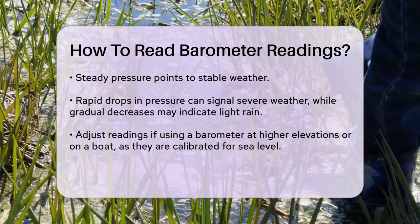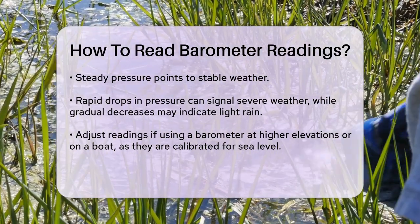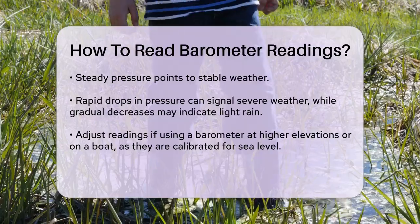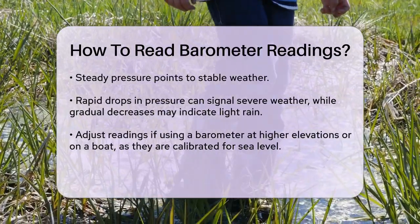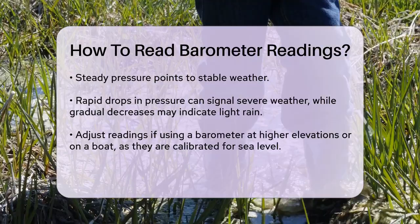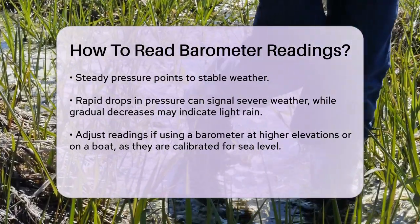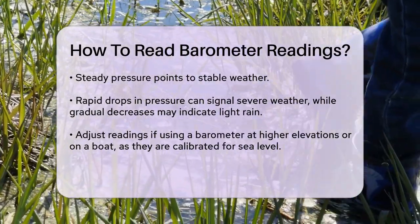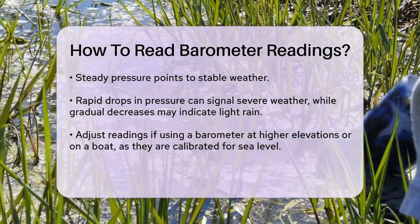There are two common types of barometers: mercury and aneroid. Mercury barometers use a glass tube filled with mercury, but they're less common now due to safety concerns. Aneroid barometers, invented by Lucien Vitti in 1844, use a flexible metal box that expands or shrinks with pressure changes, moving a needle on the dial.